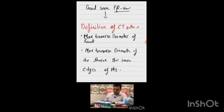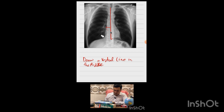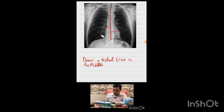It is best seen in the posterior-anterior view. The definition of CT ratio is: maximum transverse diameter of the heart divided by the maximum transverse diameter of the thorax between the inner edges of the ribs. On this X-ray, we draw a vertical midline, then draw a transverse line from the maximal bulge of the right heart border to the midline, and repeat from the left side. We label these A and B.